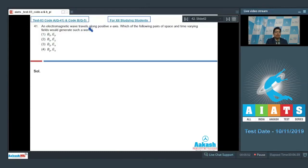An electromagnetic wave travels along the x-axis. Which of the following pairs of space and time varying fields would generate such a wave? The direction in which the electromagnetic wave travels can be calculated from the direction of E×B. Since the wave is traveling along positive x-direction, the set of values of E and B for which E×B is along i-cap will be our correct answer.